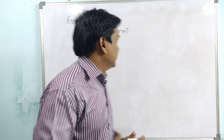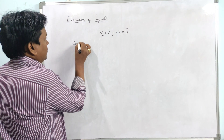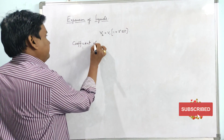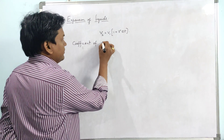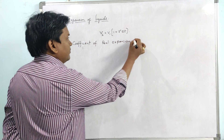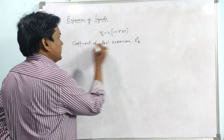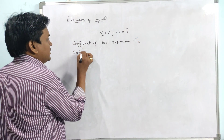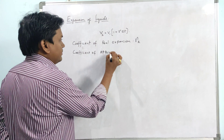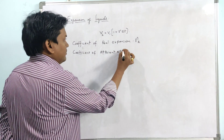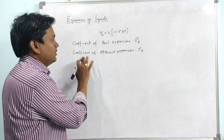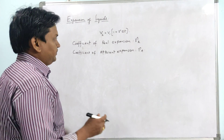This expansion of liquids is of two types: the coefficient of real expansion, which is γr, and the coefficient of apparent expansion, which is γa.